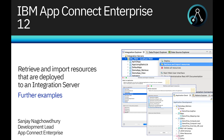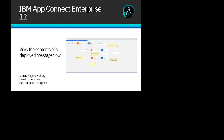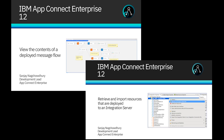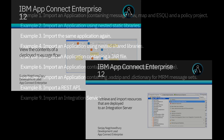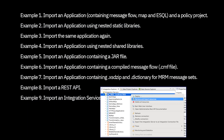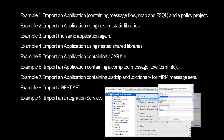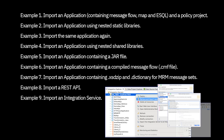Hi, I'm Sanjay Nagchaudhary, Development Lead for the IBM AppConnect Enterprise product. In my previous two videos, I described how to view deployed message flows, and separately how to retrieve and import resources that are deployed to an integration server. In this video, I will show further examples of using the capability to retrieve and import resources. The capability was added in IBM AppConnect Enterprise version 12.0.8.